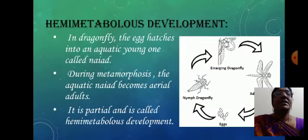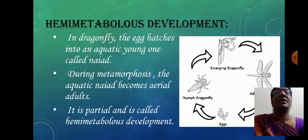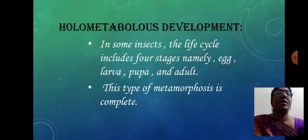In hemimetabolous development, it is found in dragonflies. During the metamorphosis, the aquatic naiad becomes the aerial adult, so it is called hemimetabolous development.